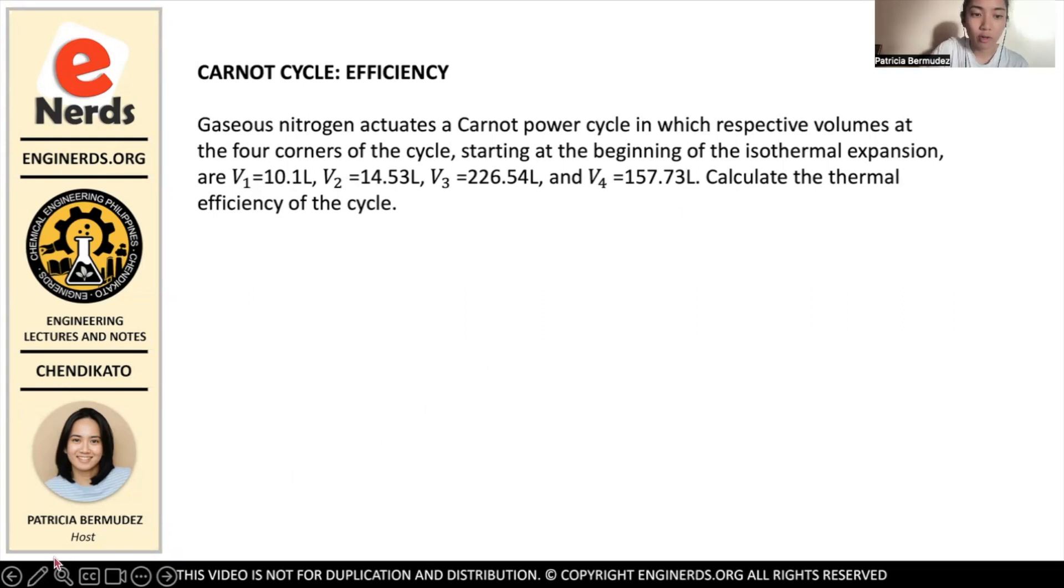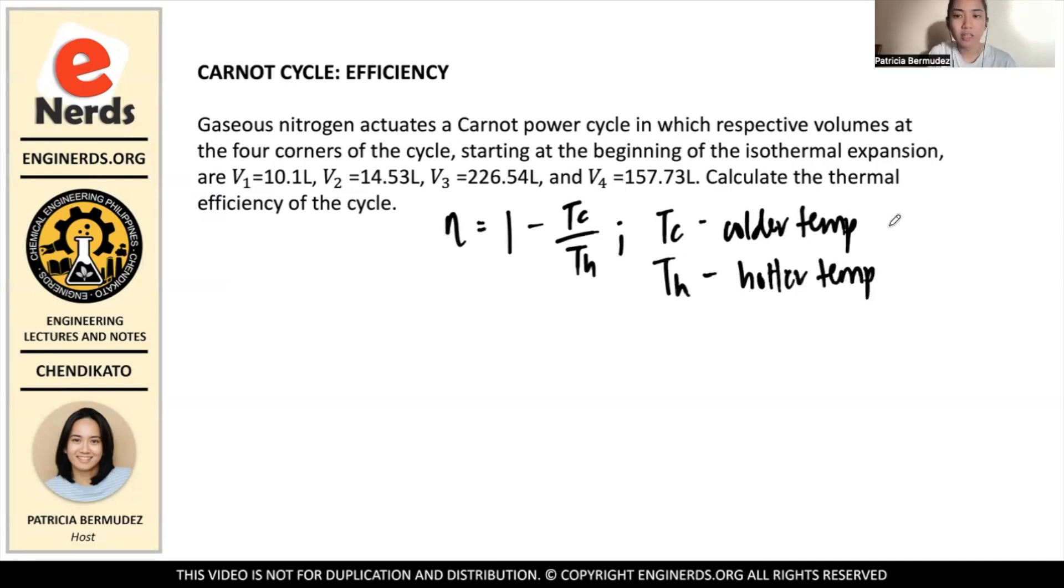So we are given four volumes and we are being asked for the thermal efficiency of the cycle. We know that the thermal efficiency of the cycle is given by η = 1 - Tc/Th, where Tc is the cooler temperature and Th is the hotter temperature. So the question here is, how can we get the Tc over Th if we are given volumes? Well, this is where the Carnot cycle comes in.